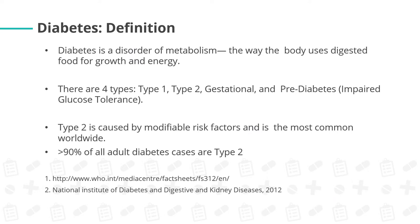Let us now proceed to the second non-communicable disease: diabetes mellitus. Diabetes mellitus is a disorder of metabolism — the way the body uses digested food for growth and energy. We have four types. Type 1 is juvenile onset, where there is little to no insulin produced by the pancreas because of the destruction of the beta cells in the islet of Langerhans. Insulin is a hormone that lowers blood glucose levels by converting glucose to glycogen, which is stored energy.